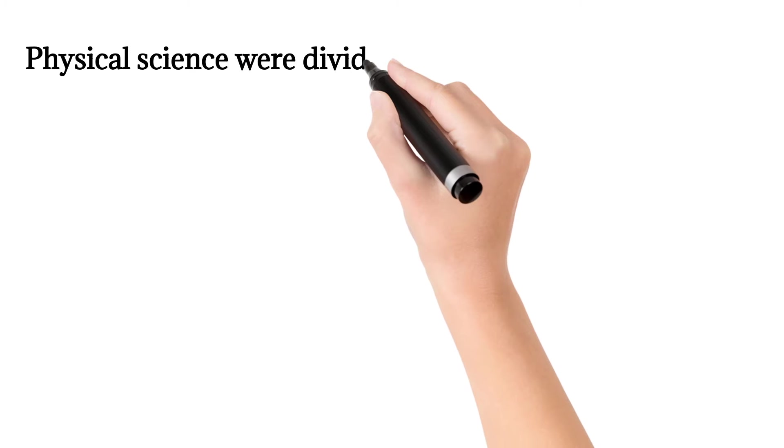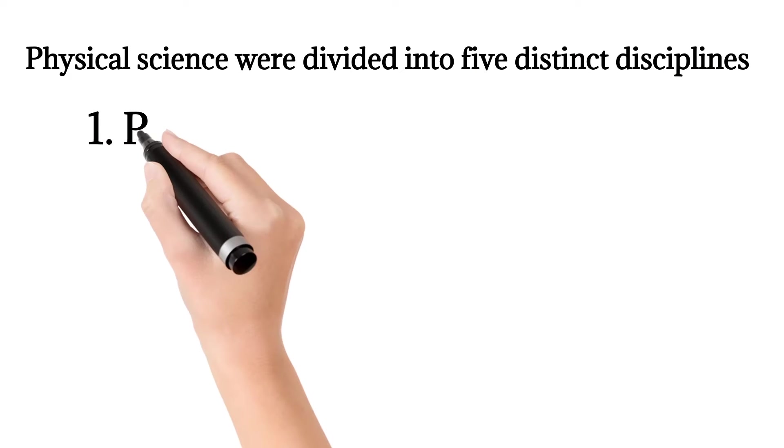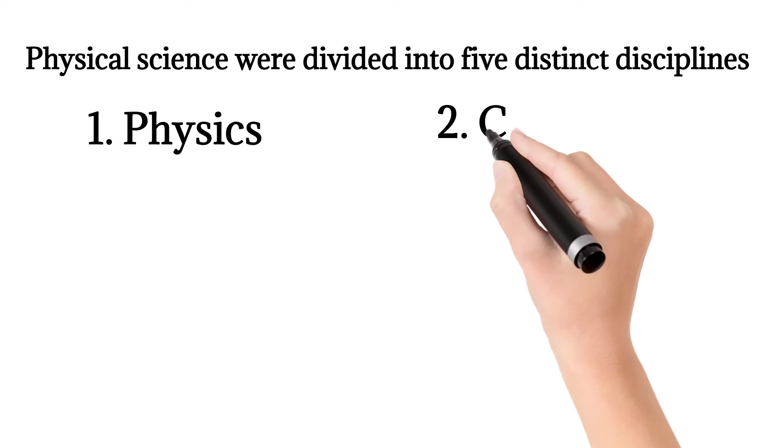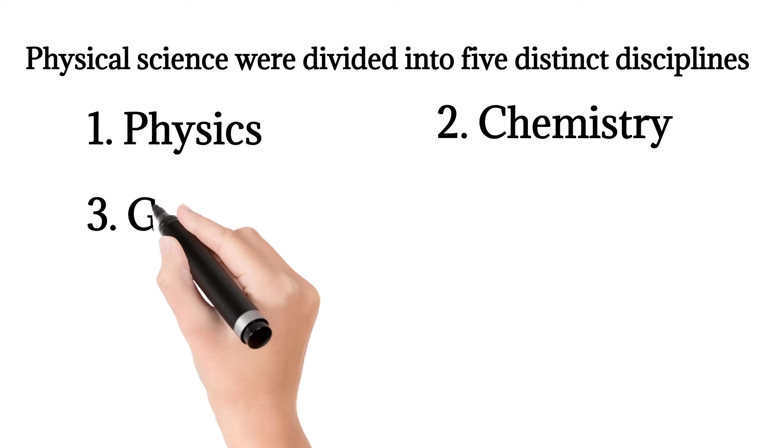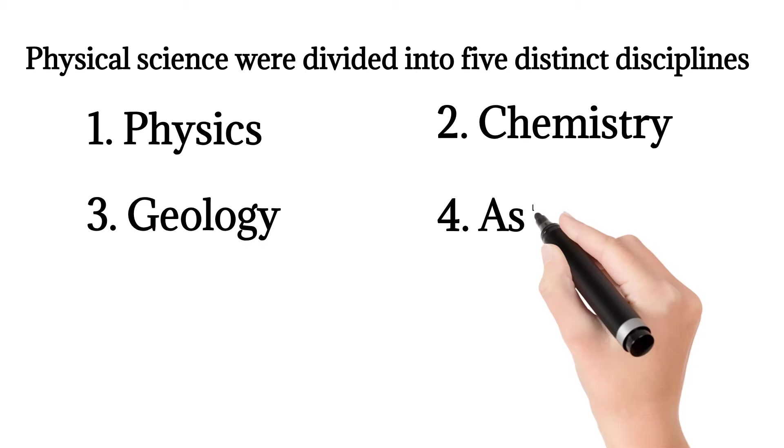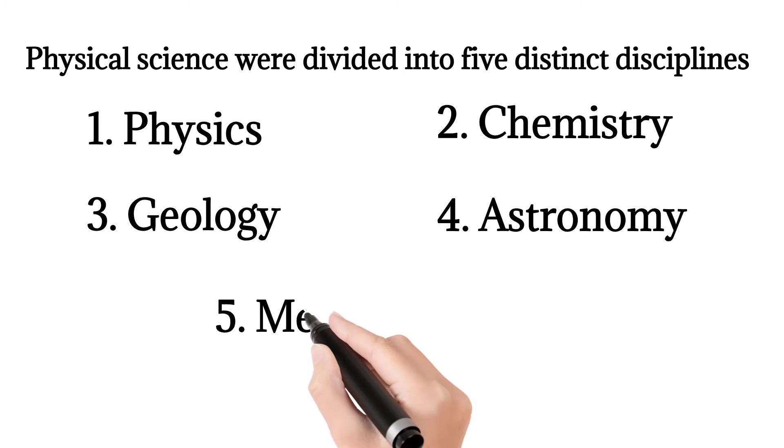Physical science were divided into five distinct disciplines: 1. Physics, 2. Chemistry, 3. Geology, 4. Astronomy, 5. Meteorology